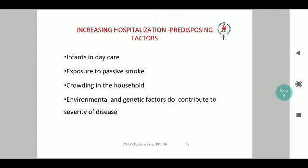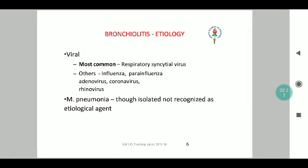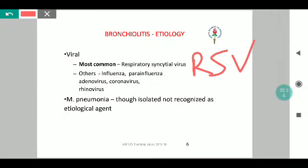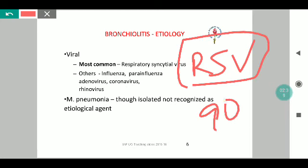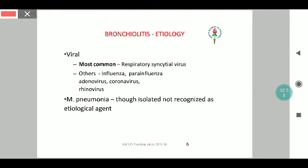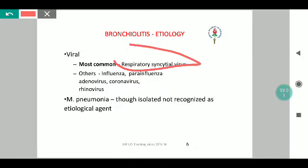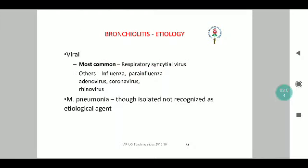The most common etiological organism causing bronchiolitis is Respiratory Syncytial Virus, also known as RSV. RSV accounts for almost 90% of all bronchiolitis. The remaining 10% is accounted for by influenza virus, para-influenza virus, adenovirus, milder forms of coronavirus, and rhinovirus. Mycoplasma pneumoniae is isolated occasionally but is not recognized as the etiological agent. The key etiological source is RSV.